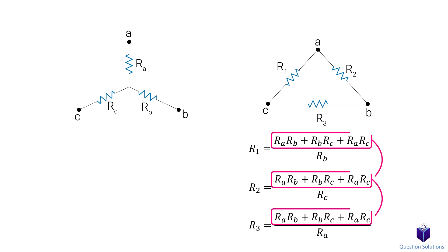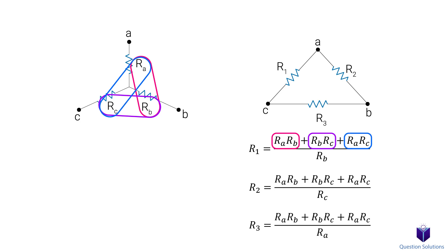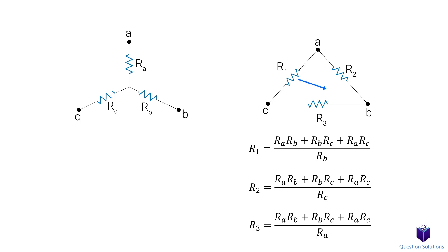Notice that on top, it's the same for all three resistors. The top is just the sum of each resistor multiplied by each other — so these two multiplied together, then these two, and lastly these two. The bottom is always the opposite resistor value. Notice how opposite to R1 is point B, so that means the bottom is going to be RB.